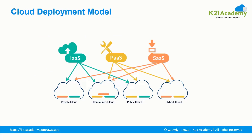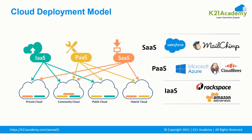Cloud deployment models: there are four cloud deployment models — private, public, community and hybrid — each satisfying different organizational needs. In public cloud you can host websites and web apps, but if you have sensitive data you will go with private cloud. If you have both a website and sensitive data, you will go with hybrid cloud. Community cloud allows systems and services to be accessible by a group of organizations. The main types of cloud computing include Software as a Service, Platform as a Service, and Infrastructure as a Service. Salesforce and Mailchimp are under SaaS; Microsoft Azure and Cloudbeast are under PaaS; and Rackspace and Amazon Web Service are under IaaS.